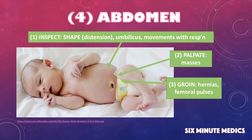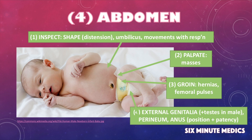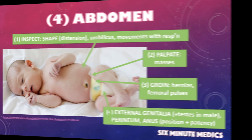Once you have done this, have a look at the external genitalia. Is your patient obviously a girl or a boy, and if it's a boy can you feel two testicles in the scrotum? From here you should inspect the perineum and have a look at the anus, establishing whether the anus is patent and that it appears in a normal position.